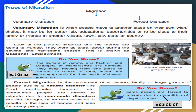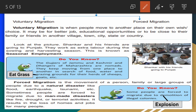Next are the types of migration. Migration is of three types: voluntary migration, seasonal migration, and forced migration. First, voluntary migration is when people move to another place on their own wish or choice. It may be for better jobs, educational opportunities, or to be close to their family or friends in another village, town, city, state, or country.